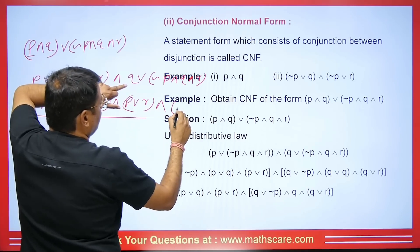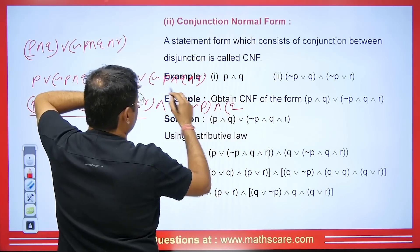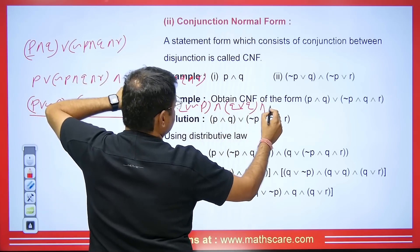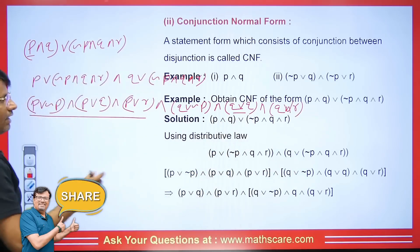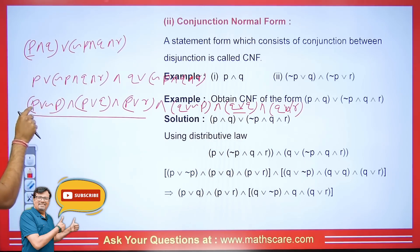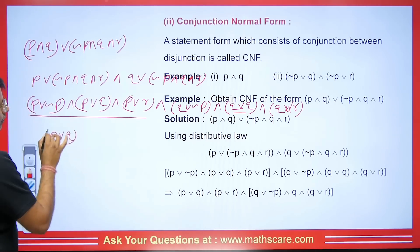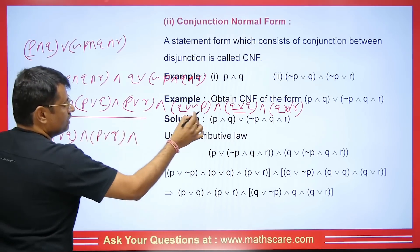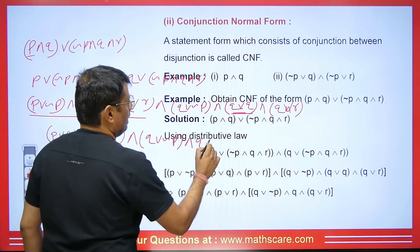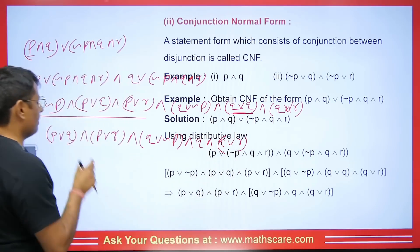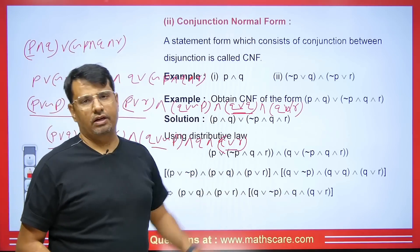Now we will simplify. We have Q going with negation P giving Q OR negation P, then AND, then Q OR Q and Q OR R. We know P OR negation P has value 1 by the complement law — so that term disappears. Q OR Q equals Q by idempotent law. So this becomes P OR negation P (which is 1, disappears), then we are left with P OR R, then AND Q OR negation P, then AND Q OR R. That is the conjunction normal form — conjunction between disjunctions. This is called conjunction normal form.